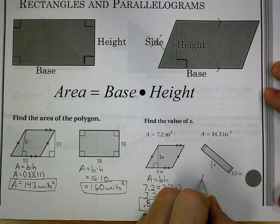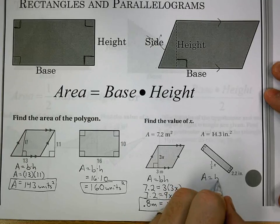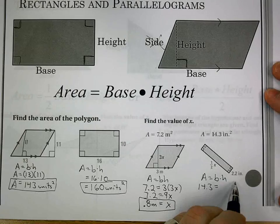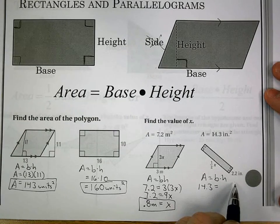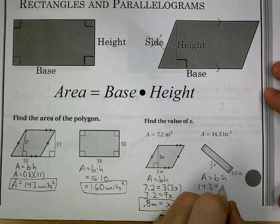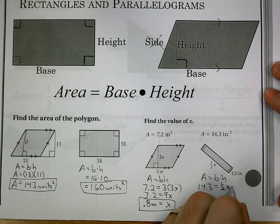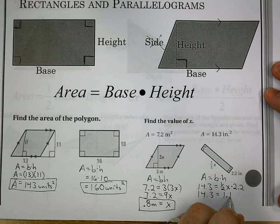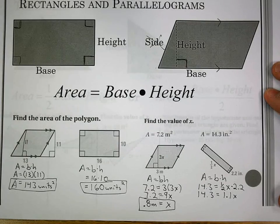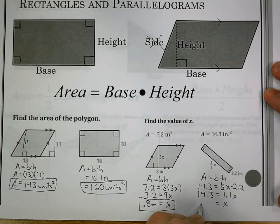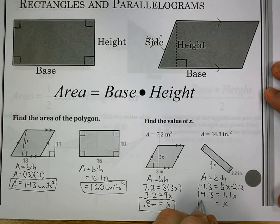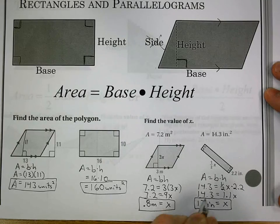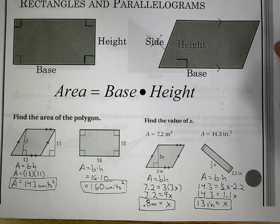Next one we have is a rectangle. So I look, area is base times height. I have 14.3 equals, well, right here, I can't really tell which one is base and height. I just know they're perpendicular. So we could just write 1 half x times 2.2. By simplifying, I get 1.1x by taking half of 2.2. Then divide 14.3 by 1.1. And I get 13. And that's inches. 13 inches.